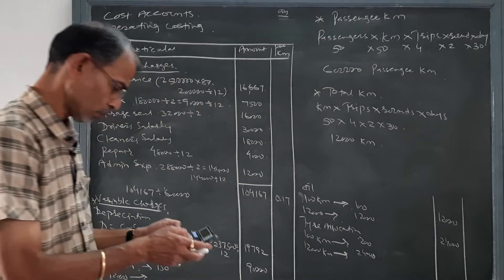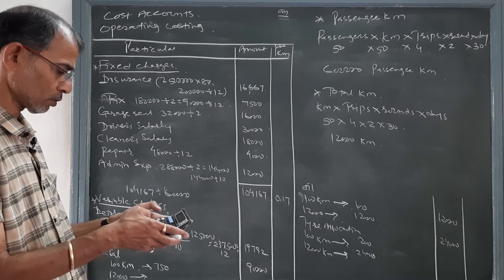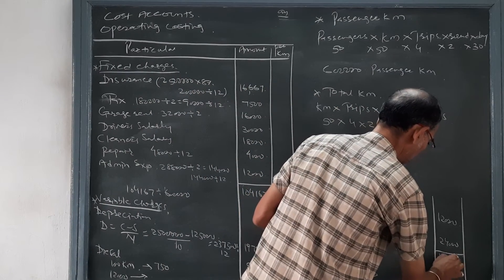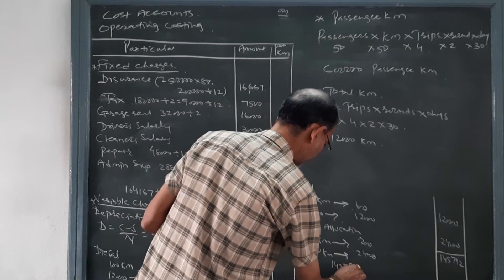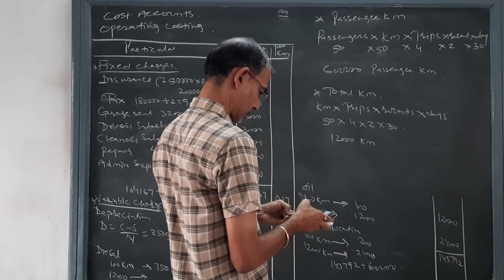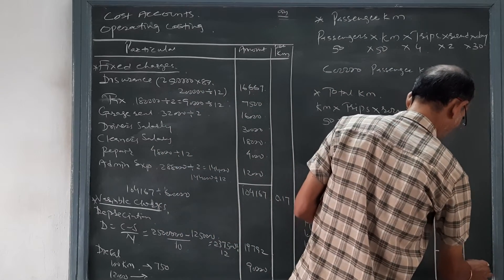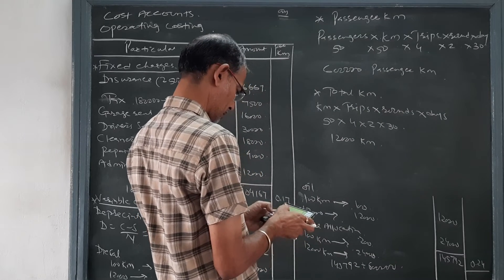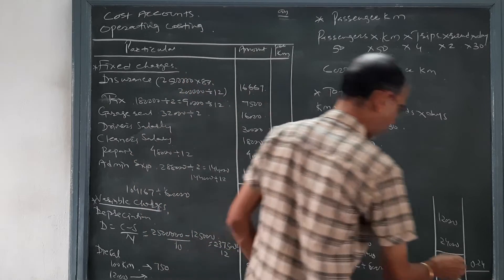Total variable cost is 19,792 + 90,000 + 12,000 + 24,000 = 1,45,792. So 1,45,792 divided by 6 lakh passenger-kilometers gives 0.24, that is 24 paise per passenger-kilometer.